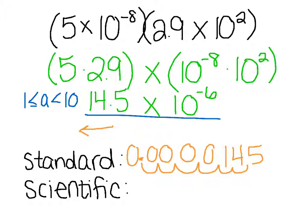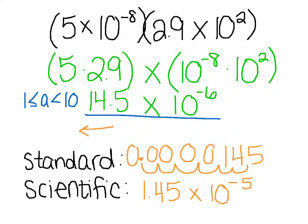That's in standard form, so then we can write it in scientific notation. I know I'm going to want my decimal point to go right here, because we want our number to be between 1 and 10, not including 10. So I'm going to have 1.45 times 10. Now I know it's a really small number, so I know I'm going to have a negative exponent. Counting our spots: 1, 2, 3, 4, 5. So my new number in scientific notation is 1.45 times 10 to the negative 5th. And that is in proper notation.